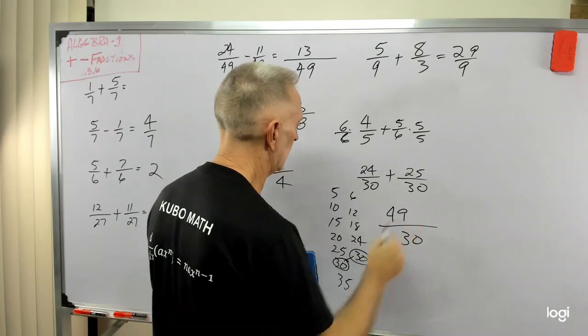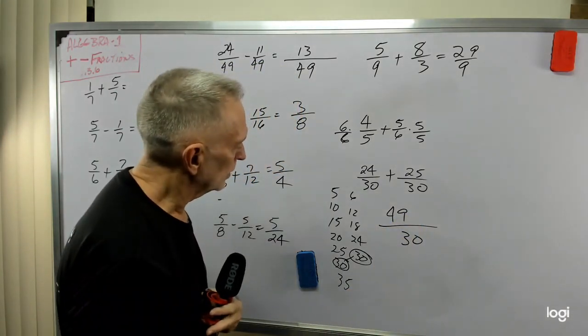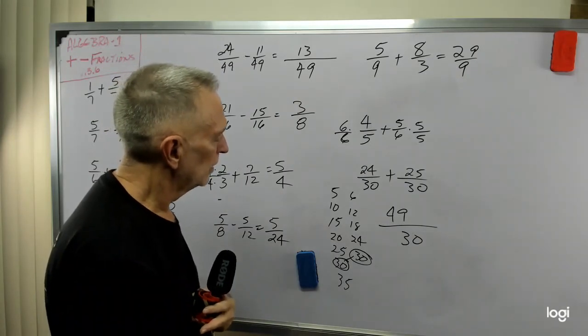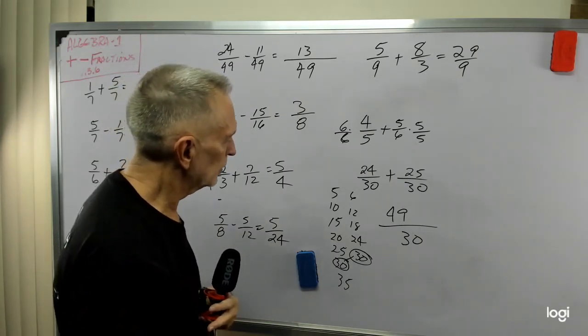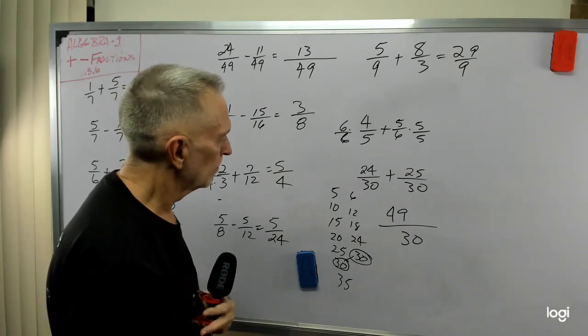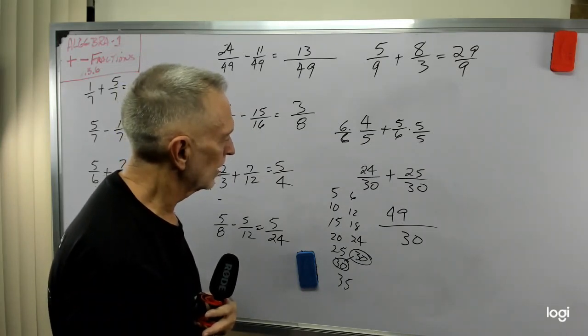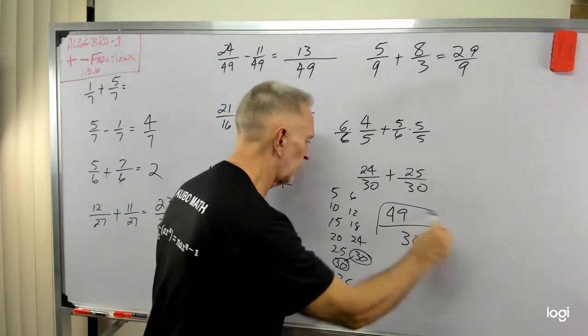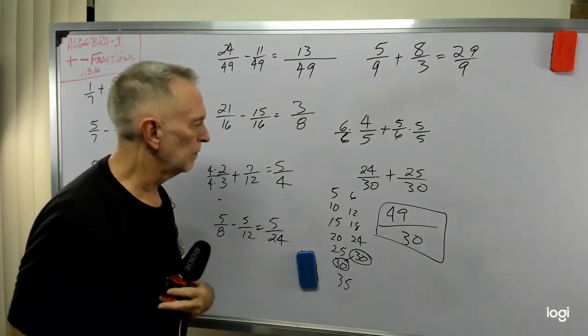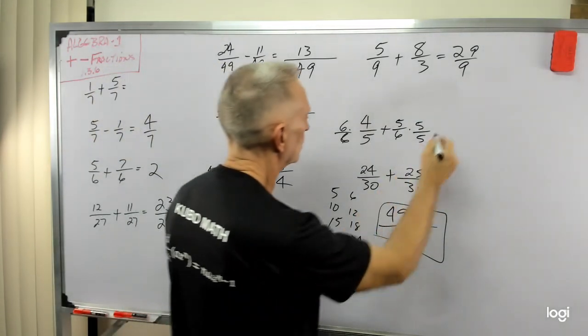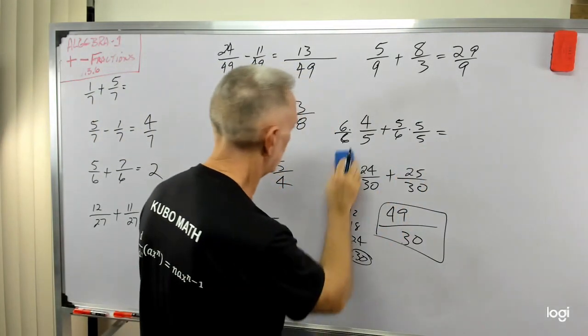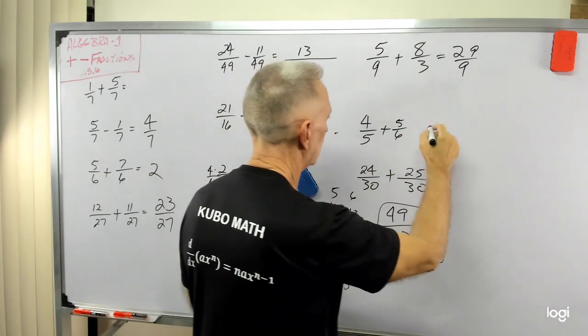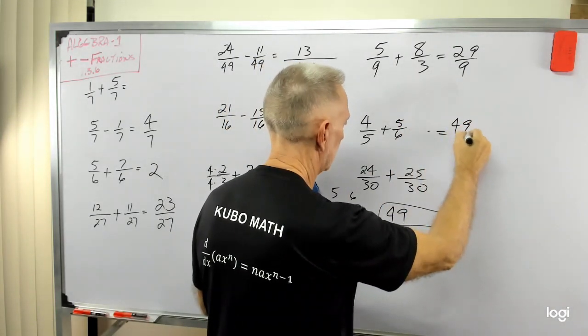So now I have the common denominator of 30. So that gives me 49 over 30. Let's see. 49 is 7 times 7. 6 times 5. That's the best we can do. So 49 over 30. I thought that might reduce, but no. So 4/5 plus 5/6 equals 49 over 30.